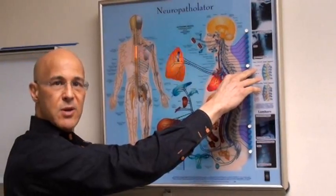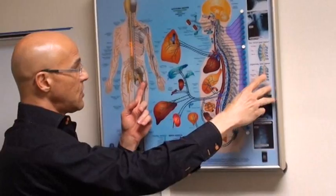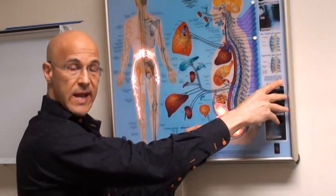Every nerve, 31 pairs of nerves affecting not only the muscle and the joints, but affecting the organs, the tissues, the glands.